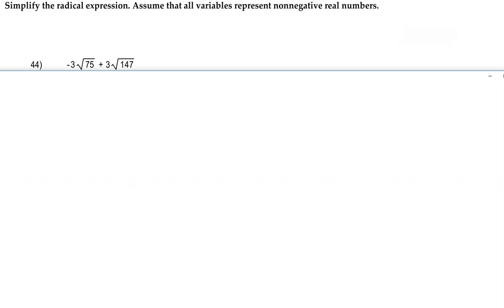Hey guys, for number 44 we're going to simplify the radical expression -3√75 + 3√147, and we're going to assume that all variables represent non-negative real numbers. Here we don't have any variables in this problem, so we're going to disregard this second sentence.